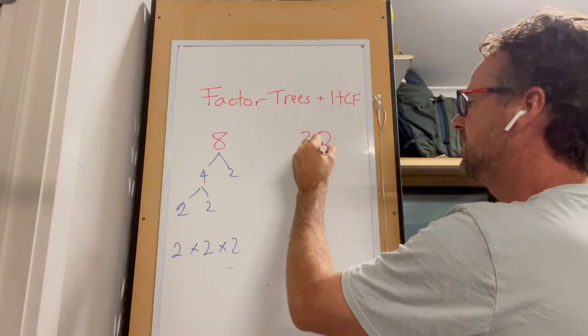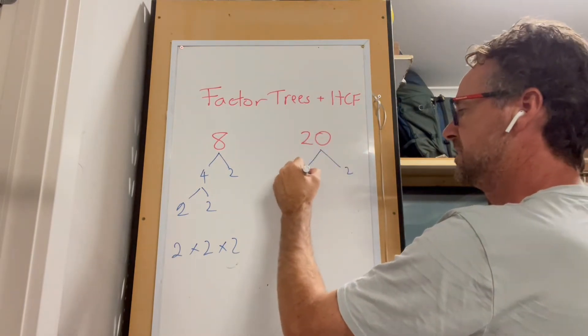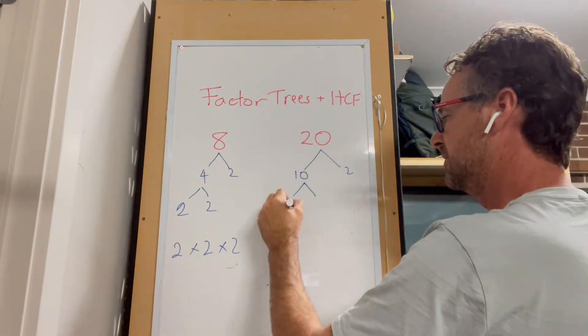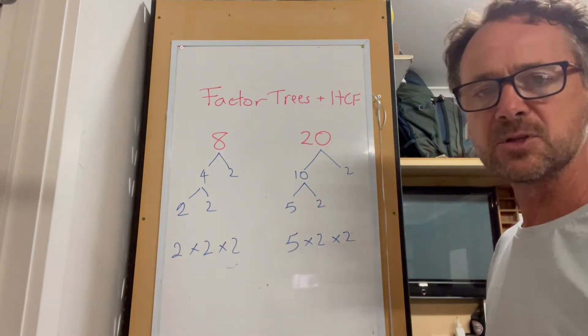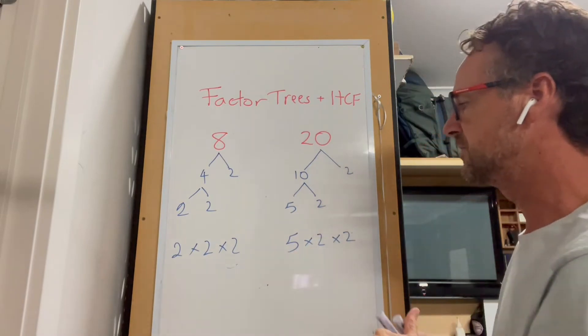Over here we have 20: that's 2 and 10, and then 5 and 2. We have 5 by 2 by 2. Once we have the two sets of numbers, what we're looking for is the common ones - the common numbers in both. So that's that 2 there and that 2 there.